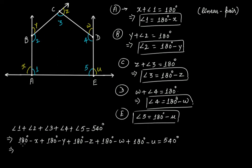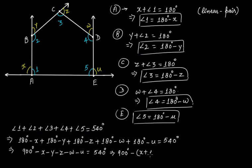From here, 180 plus 180 is 360, plus 180 is 540, plus 180 is 720, plus 180 is 900. So you get 900 degrees minus X minus Y minus Z minus W minus U is equal to 540 degrees. This can be written as 900 degrees minus (X plus Y plus Z plus W plus U) is equal to 540 degrees.